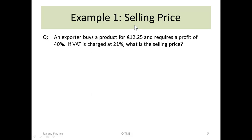Example 1: Calculating the Selling Price. An exporter buys a product for $12.25 and requires a profit of 40%. If VAT is charged at 21%, what is the selling price? We highlight the three areas of interest: a purchase price of $12.25, a desired profit of 40%, and VAT to include as well.